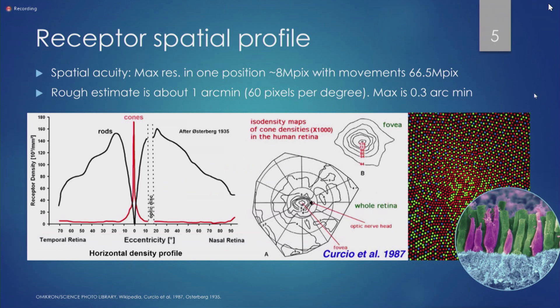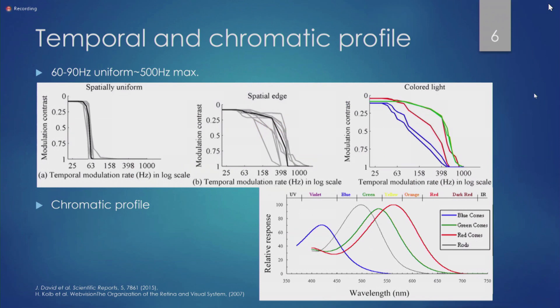In terms of temporal profile: without any spatially varying information — for example, a plain white-and-black switching screen — the frequency your eye can detect is about 60 to 90 Hz, which is why displays were originally set to that refresh rate. But research shows that with different colors or spatial information, this can extend significantly, up to 500 or even 800 Hz. For example, in the color green with a certain spatial frequency, you can detect up to 800 Hz. That's why gamers have been pushing frame rates higher — a study published in Scientific Reports pinpointed that this number varies with color and spatial frequency.